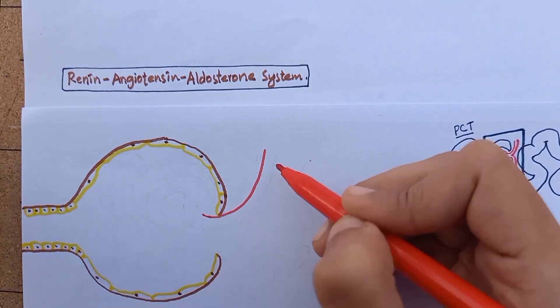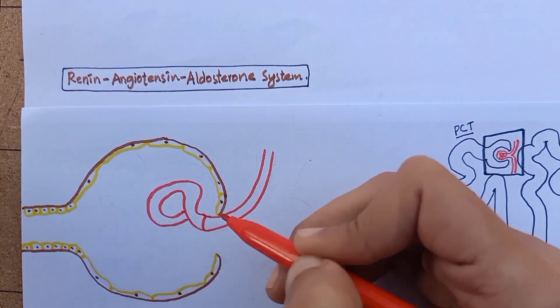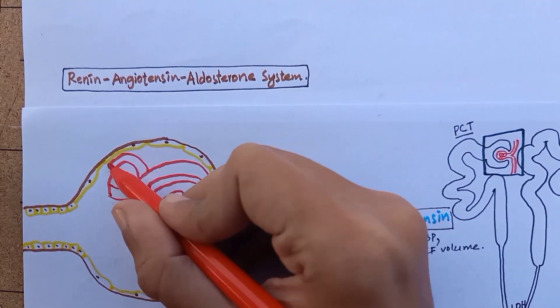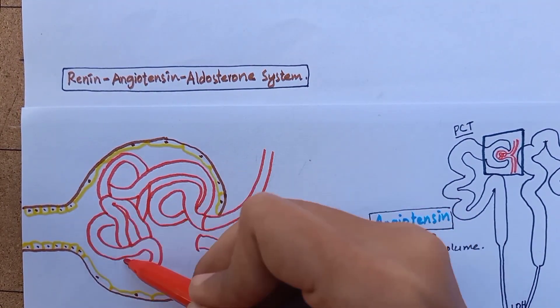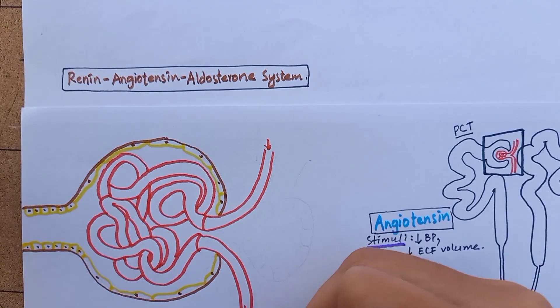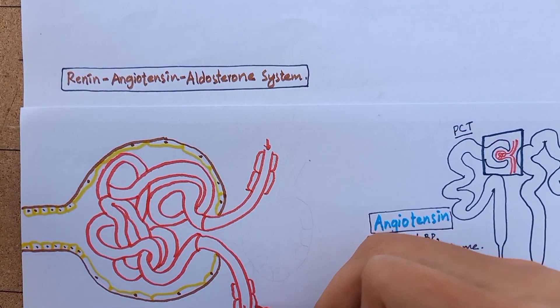In this portion of nephron, there is a special anatomical arrangement that consists of juxtaglomerular cells, which are modified smooth muscle cells in the walls of afferent and efferent arterioles.